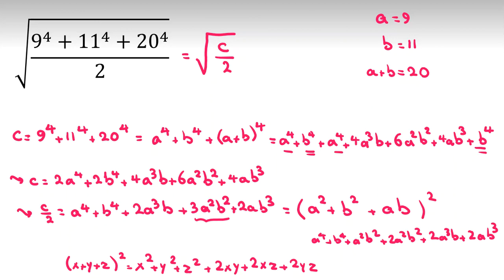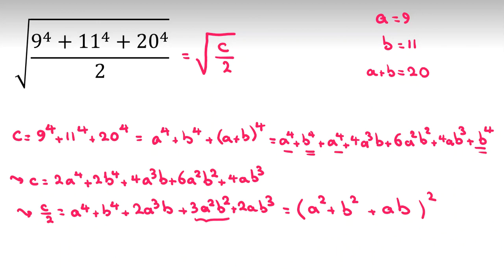Okay. Well, we proved this is a perfect square. Now, it's good. Why? Because we want to take a square root of C over 2. So, square root of C over 2 will be A squared plus B squared plus AB.